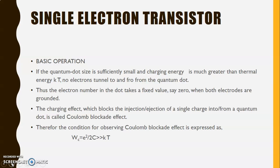Now what do you mean by this charging energy? The charging energy is represented by Wc. There is a condition for observing the coulomb blockade effect: Wc equals e² by 2C, where e is the charge of electron, capital C is the capacitance, k is the Boltzmann's constant, and T is the temperature.